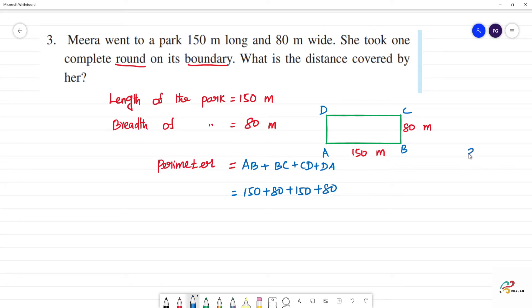So 150 plus 150 is 300. 80 plus 80 is 160. So adding all these, the number is 460 meters. So the boundary, what is the distance covered by her?